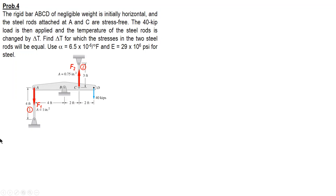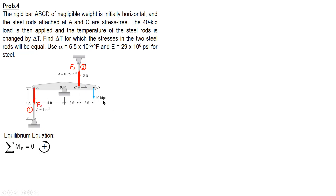Considering equilibrium, we sum moments at B to get rid of the reaction at B. Our sign convention is counterclockwise positive. F1 is counterclockwise with a moment arm of 4. F2 is also counterclockwise with a moment arm of 2. The 40-kip load, expressed as 40,000 pounds, is clockwise — so negative — with a moment arm of 4 as well.